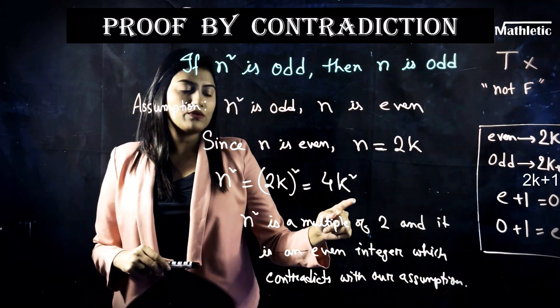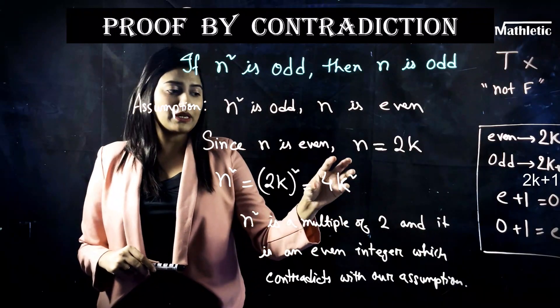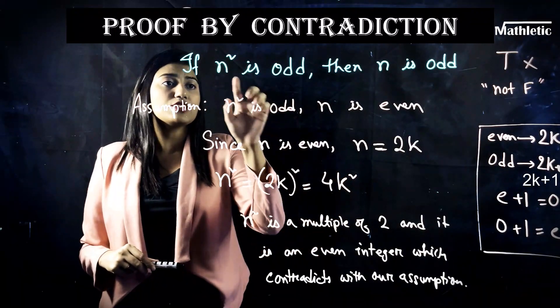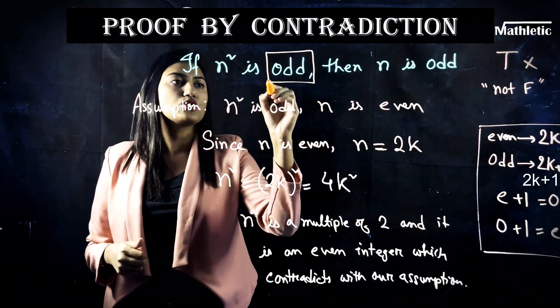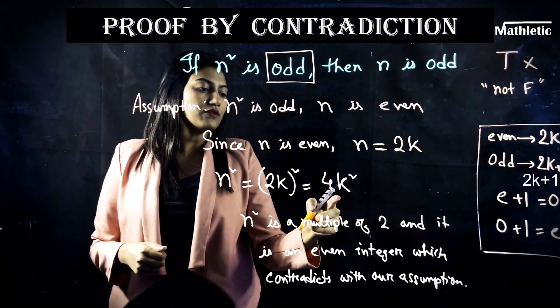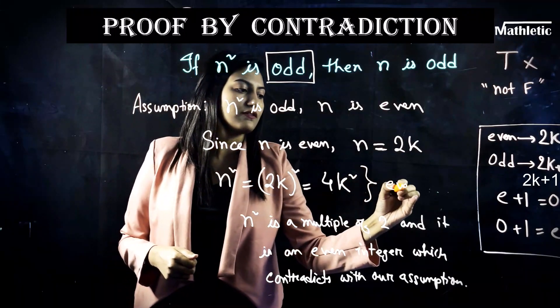n² is 4k² which is obviously a multiple of 2. That makes it an even number. But n² was supposed to be odd. Our initial assumption was that n² is odd but eventually we got this thing which is an even value.